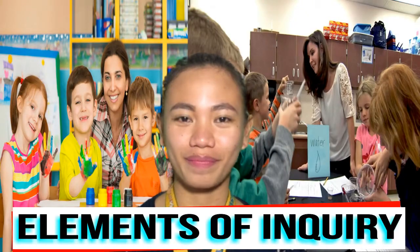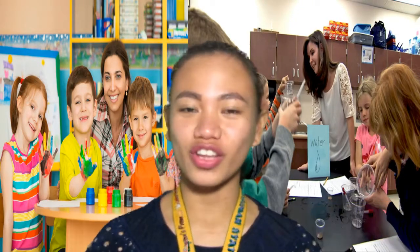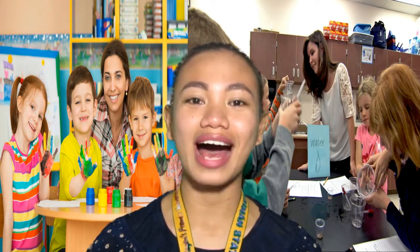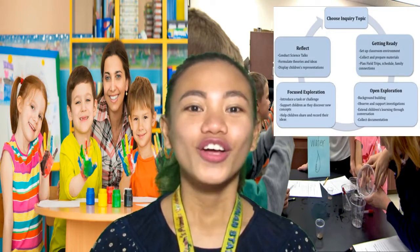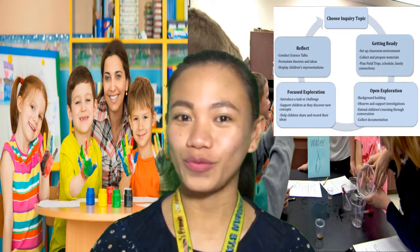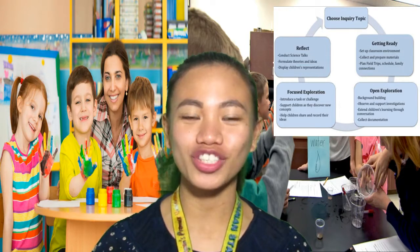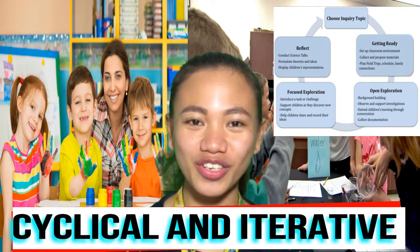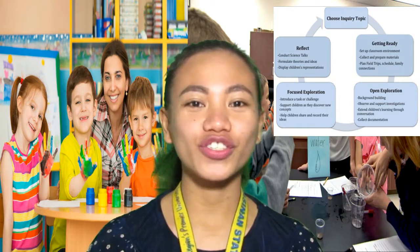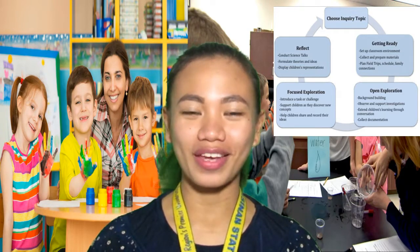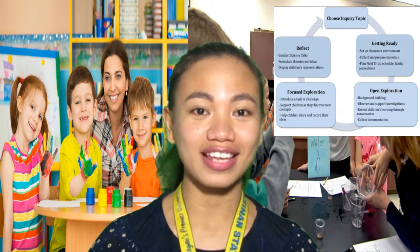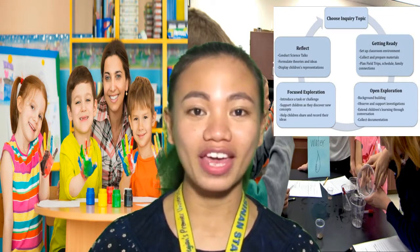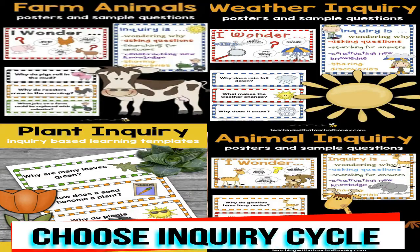These elements of inquiry are broken down into five parts in the inquiry cycle chart. This chart is a visual to illustrate the way in which the inquiry approach is cyclical and iterative over time. For the start of a new inquiry topic, you as teachers will move through these phases at an appropriate pace for your students.